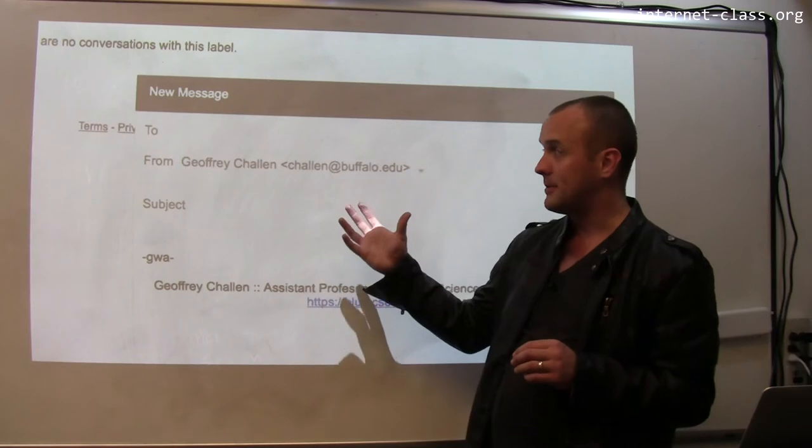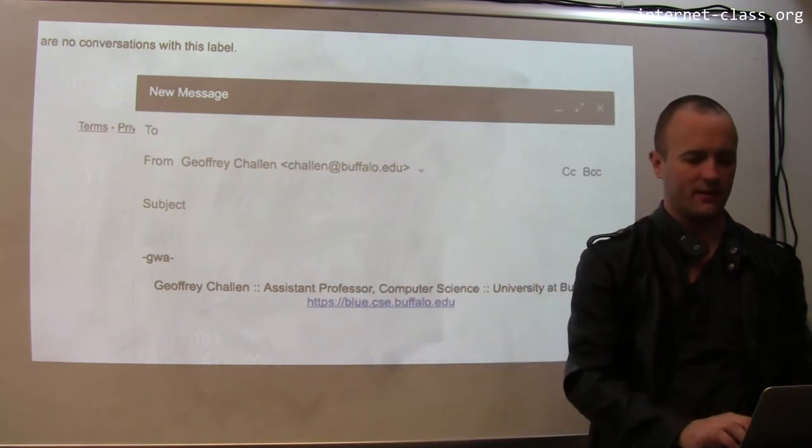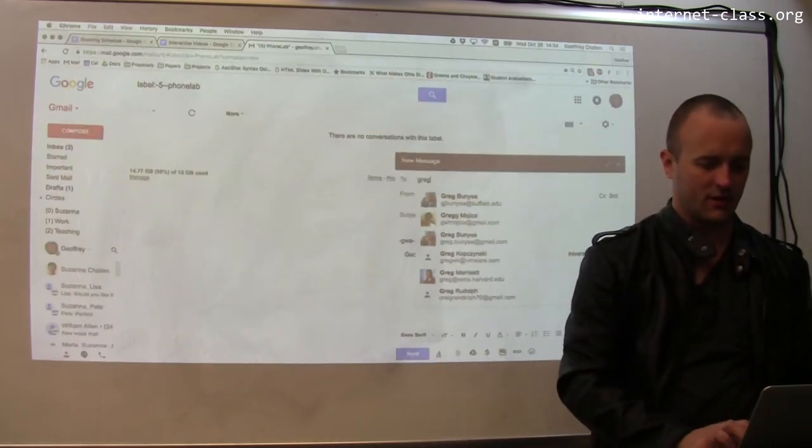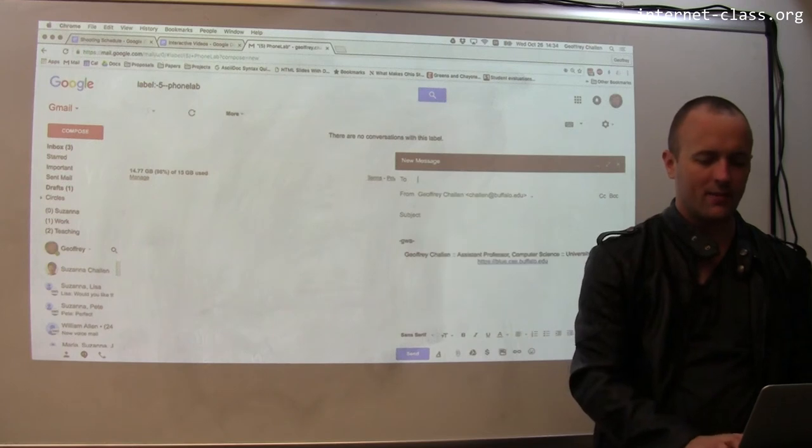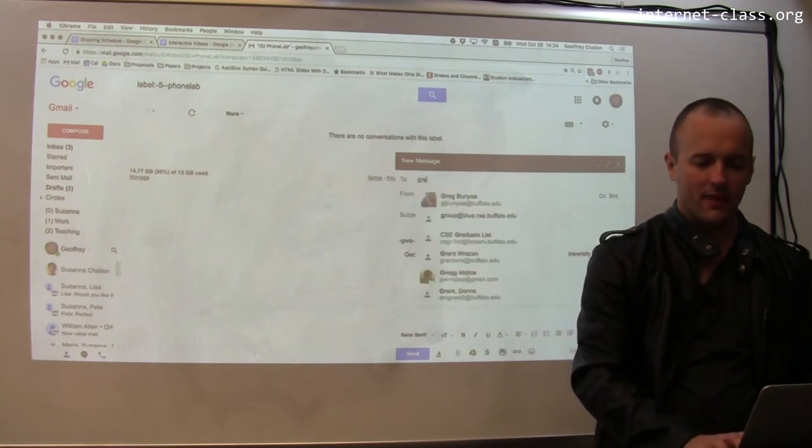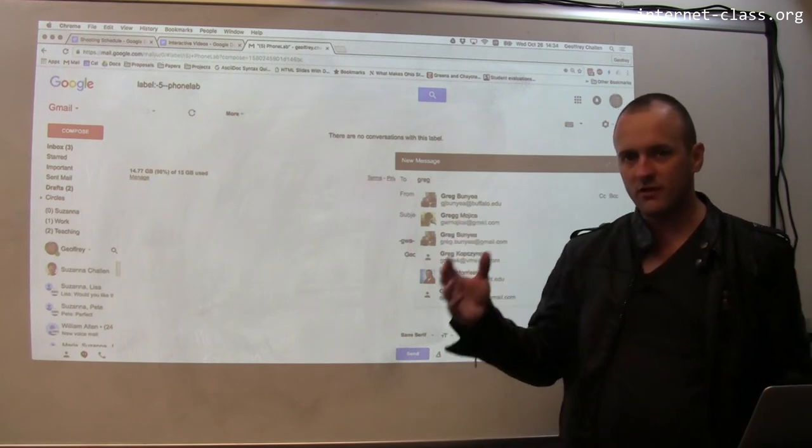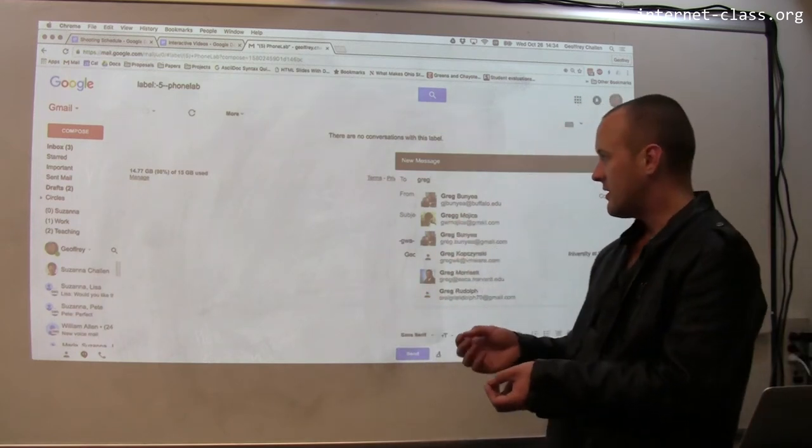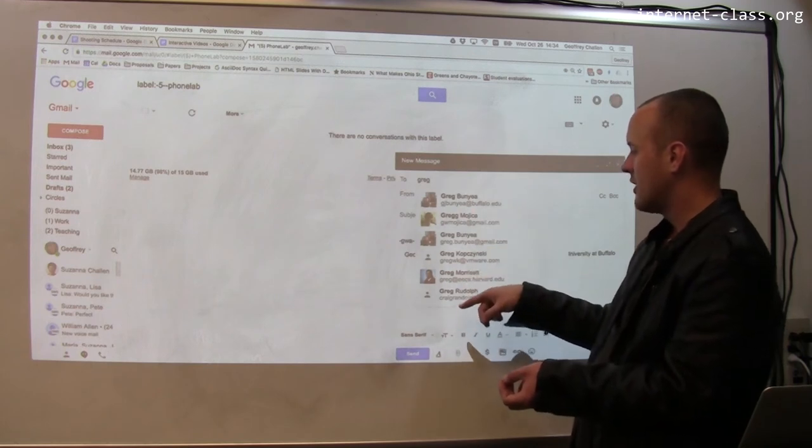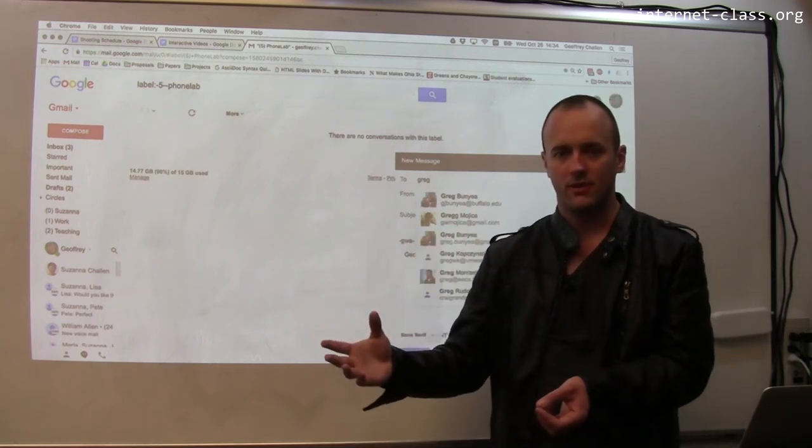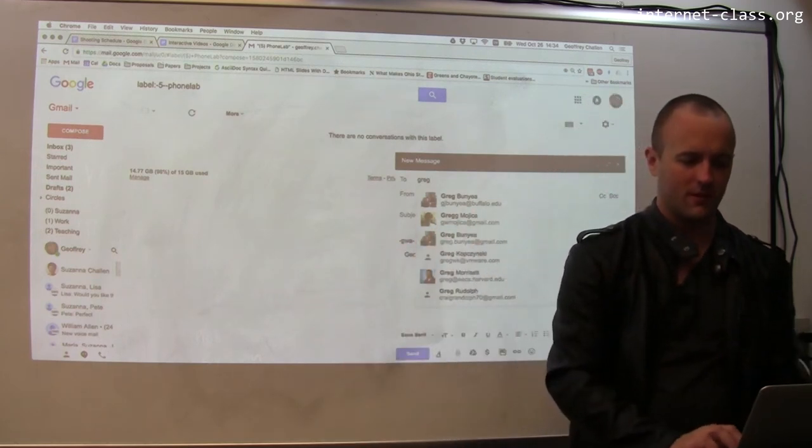So now I have this message that I can start typing, and I'm going to send an email to Greg. So again, what's happening here? Every time I type, there is a piece of JavaScript code that's running. And what it's doing is, it's looking at the input into this field, and it's figuring out, based on my contacts, who should I email? So it's bringing up a list of people whose name starts with Greg.